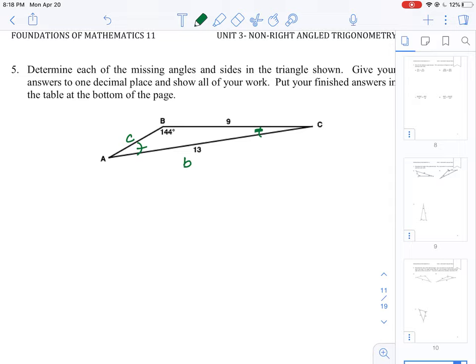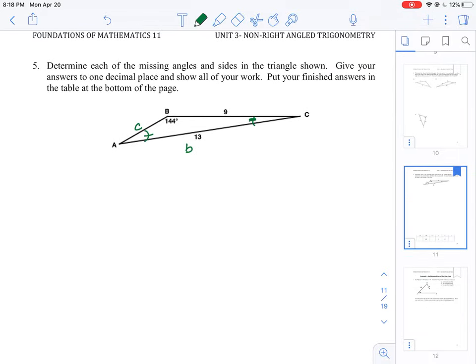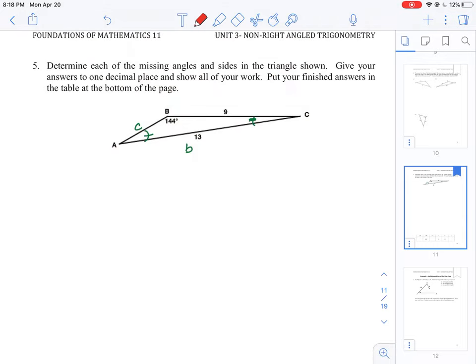In a question like this we need to look at what we're given and what we have to find. This type of question, we were using cosine law in some previous questions because we were given a side angle side. Now if you look at this, the way this question is set up, we're missing side C, but I have angle B and I have side length of 9.